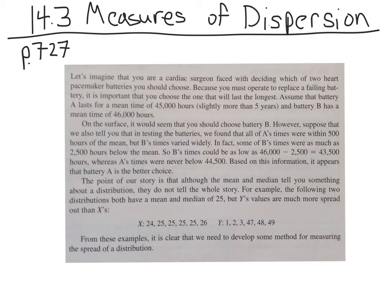There's a great example here on page 727 that shows us why we need this. I'll give you the short version. You're a doctor, you're trying to pick out pacemakers, and you're looking at battery life. You've got battery A that has a mean, an average lifetime of 45,000 hours. And battery B has a mean time of 46,000 hours. So just looking at the means, you would want to take battery B.